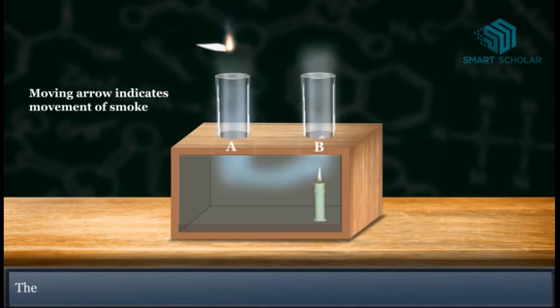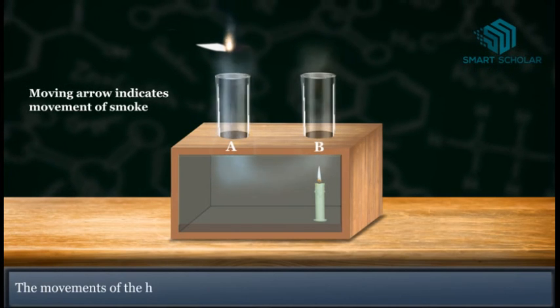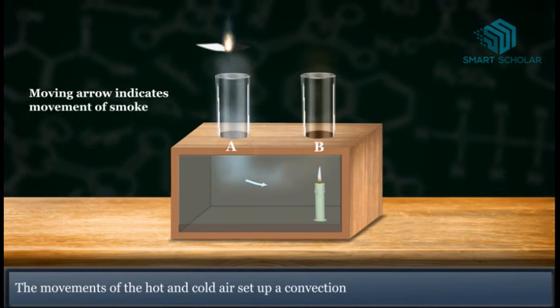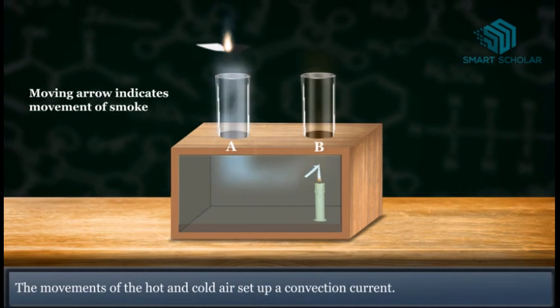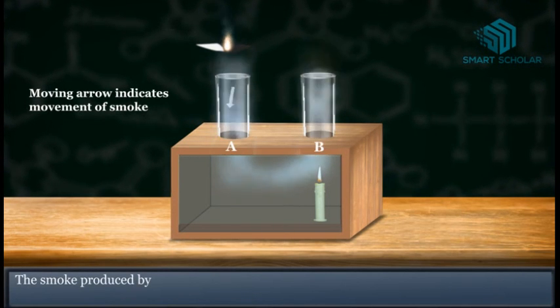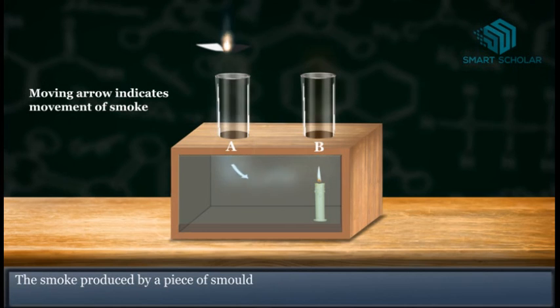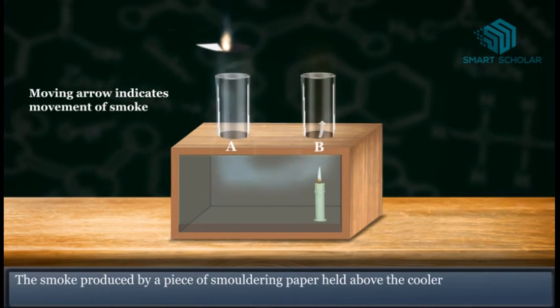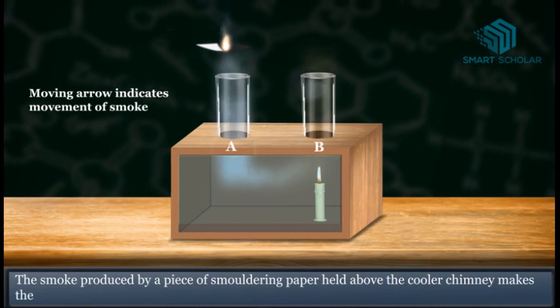The movements of the hot and cold air set up a convection current. The smoke produced by the smoldering paper held above the cooler chimney makes the convection current visible.